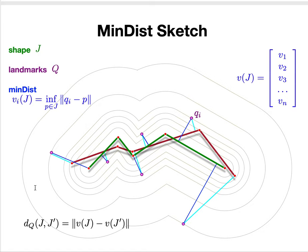To summarize, the MinDist sketch gives you a vectorized representation of any shape. It makes it very useful for nearest neighbor searching and any sort of learning or data analysis with curves.